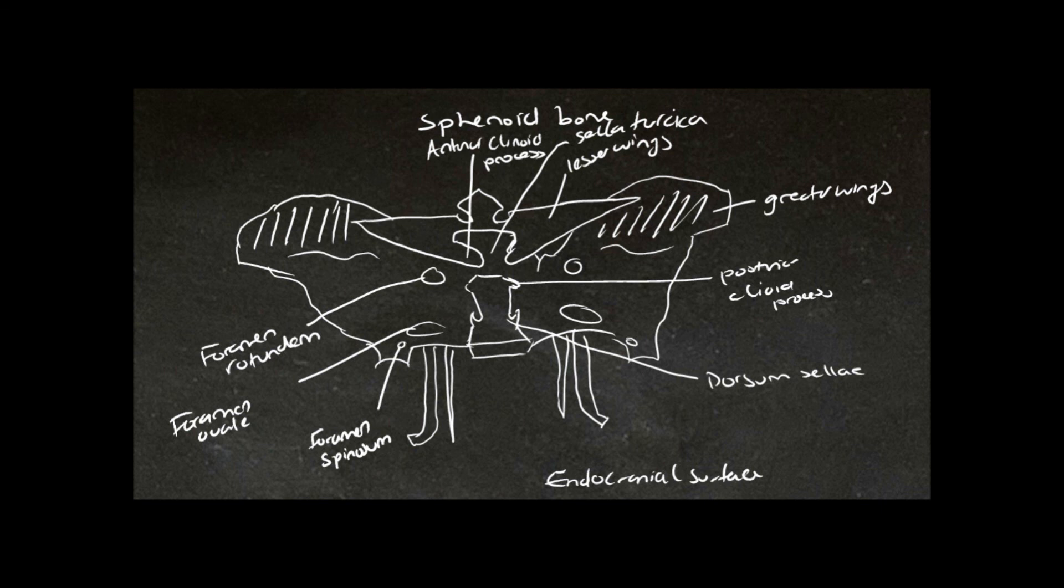And these bits that are projecting from the ectocranial surface are those medial and lateral pterygoid plates.